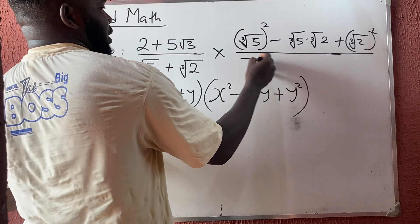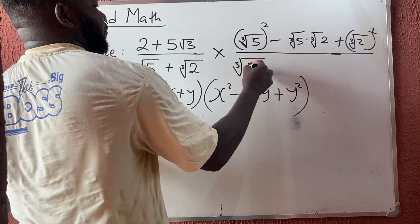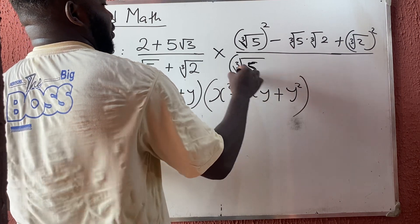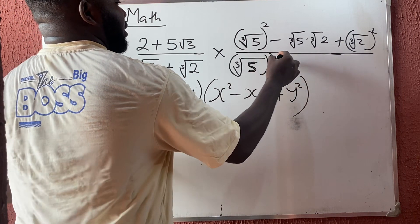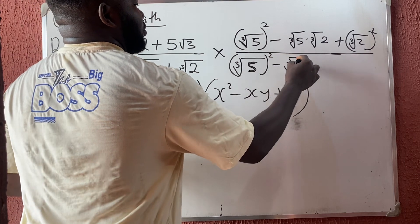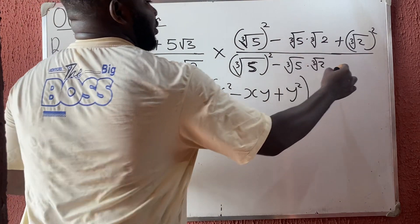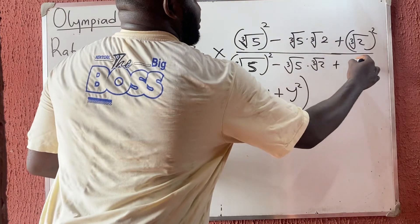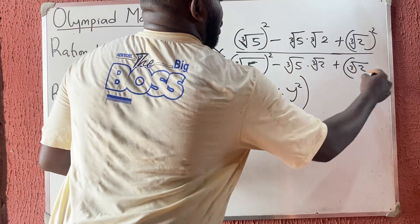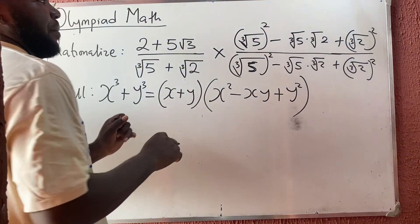...plus the cube root of 2, all squared. The same expression goes in the denominator as well: cube root of 5 all squared, minus cube root of 5 times cube root of 2, plus cube root of 2 all squared.